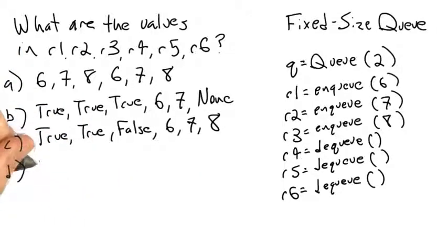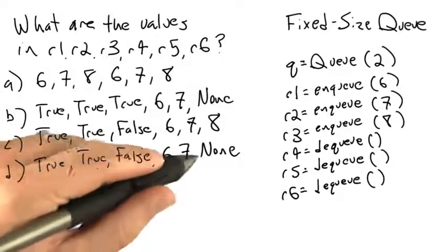And choice D is going to be true, true, false, 6, 7, none.